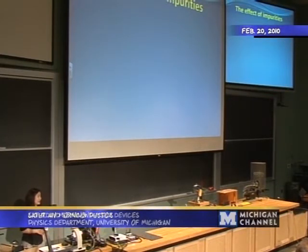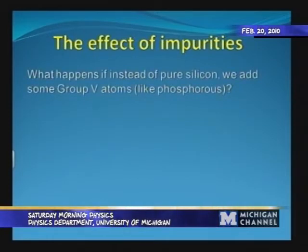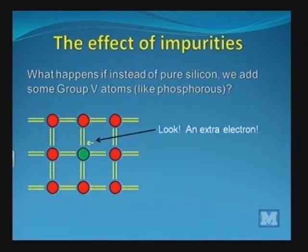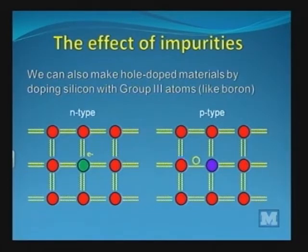You can also change the electrical properties of a semiconductor by adding impurities. What if you had a group five element like phosphorus inside your crystal? Phosphorus has five valence electrons, so it can still form four bonds and then have one electron left over. This creates what is called an n-type material, or an electron-doped material, because there are extra electrons. Similarly, putting in a group three element would create a p-type or hole-doped material, because there would be extra holes that could contribute to conduction.